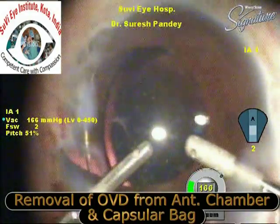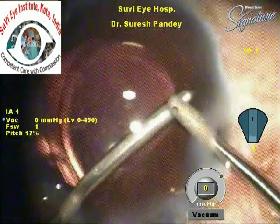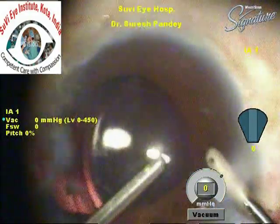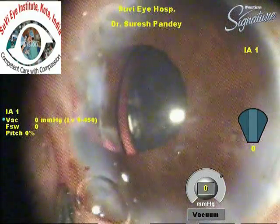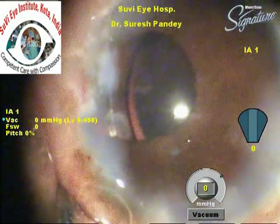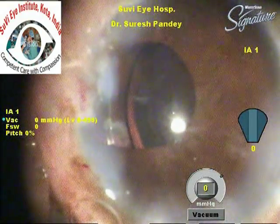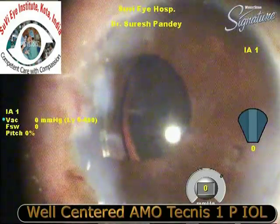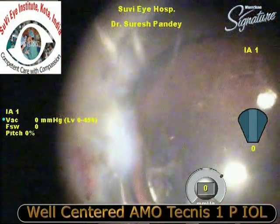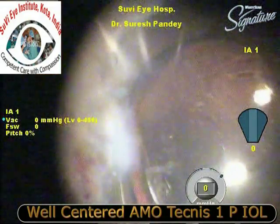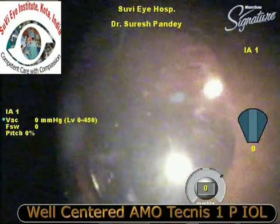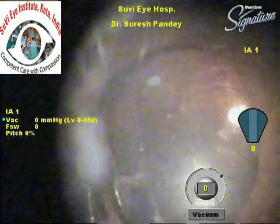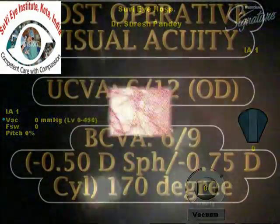We then remove viscoelastic from the anterior chamber and from the capsular bag. At the end of surgery, the IOL is well centered, though the pupil is slightly distorted due to the previous trauma. In the post-operative clip, the AMO IOL is very well centered.